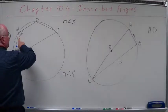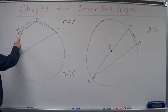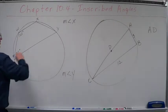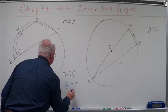Okay, so that means angle W and angle Y are supplementary. So what's a supplement of 120? Add what to it to get 180? That means this has to equal 60 degrees.